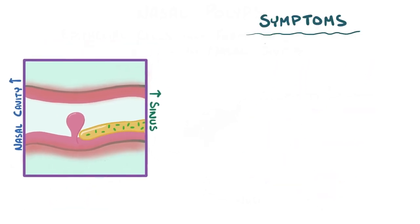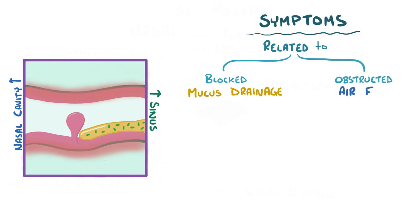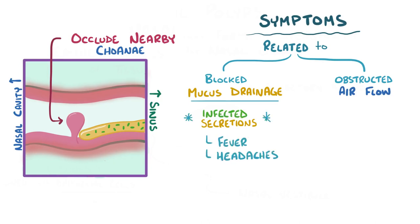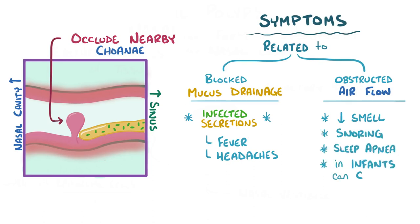The symptoms of nasal polyps are usually related to blocked mucus drainage and obstructed airflow. As the polyps grow, they occlude the nearby choanae and block sinus mucus drainage. This can leave the sinuses full of secretions that get infected, causing bouts of fevers and headaches. Obstructed airflow can prevent air from reaching the olfactory region and decrease the sense of smell. It can also cause snoring and sleep apnea, and in young infants it can cause reduced levels of oxygenation, called hypoxia, which gives a bluish tinge to their skin color.